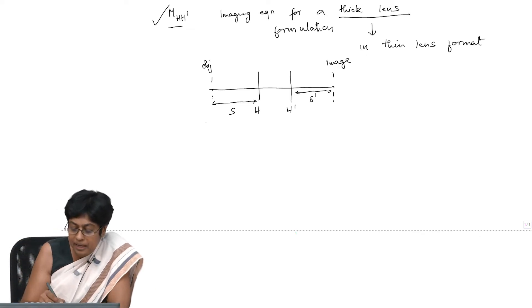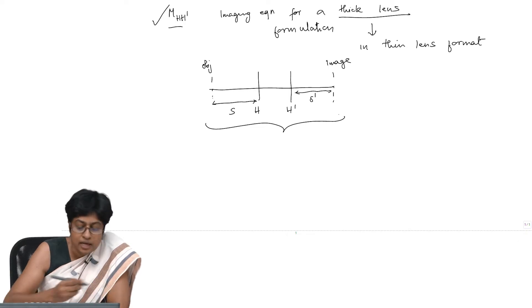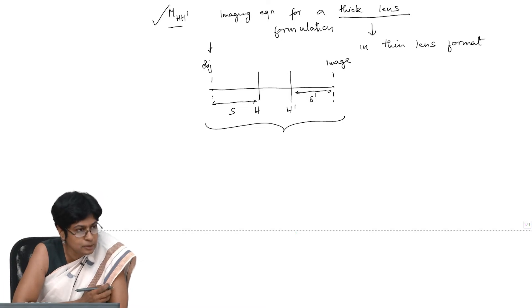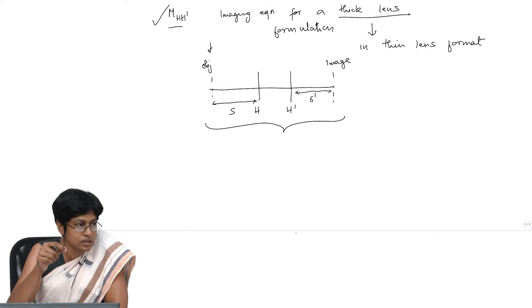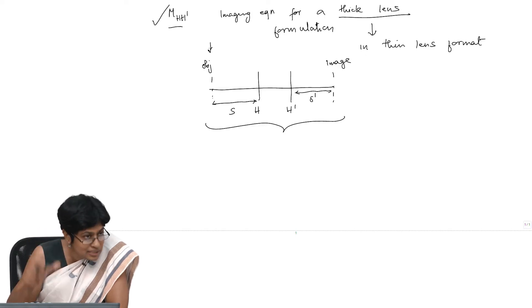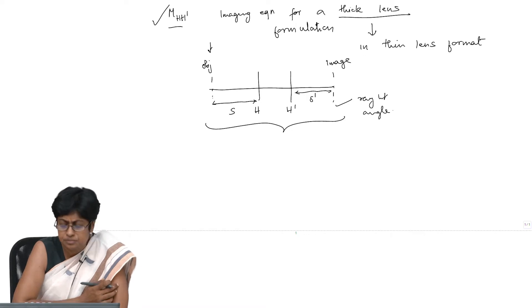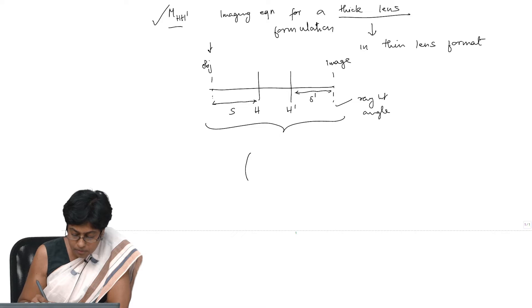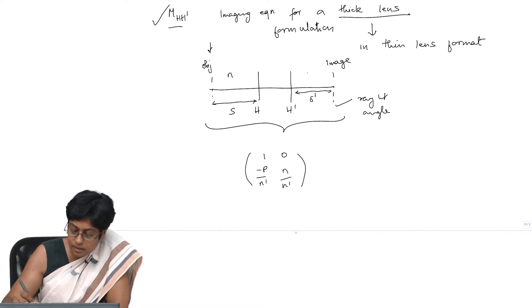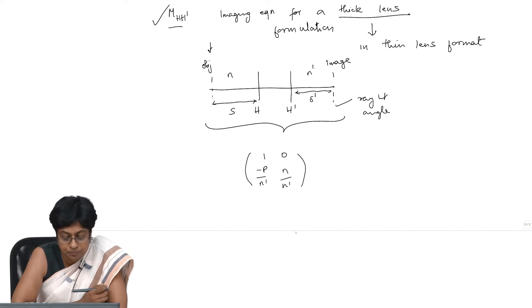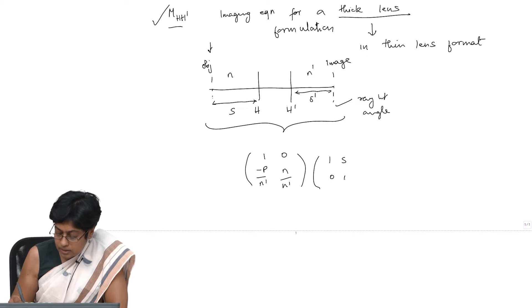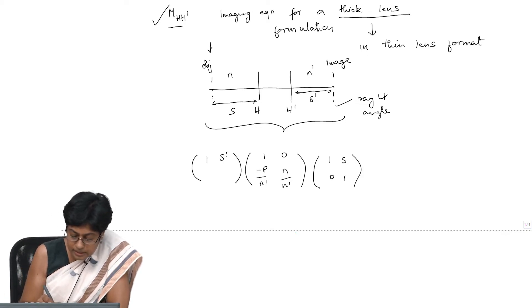Just as we took the system matrix and added distances to find out where these principal planes operations were, now I am going to develop the matrix for this entire system. What does that mean? It means if I am given the ray height and ray angle at this point—that is the ray coming from a certain height of the object with the particular angle—I will be able with this new matrix that I develop to say what is the ray height and angle at the image plane. I am going to have M H H dash: it is 1 by 0, the power of that system by the refractive index N by N dash. Remember we are saying this is N and this is N dash, just keeping it most general. The object distance is 1 S 0 1, the image distance is 1 S dash 0 1.